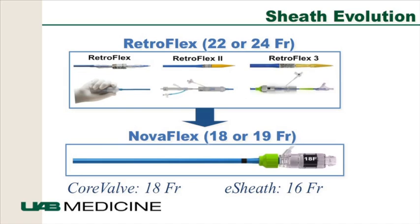Part of the ways of dealing with this is to reduce sheath sizes. The currently approved device comes with a RetroFlex catheter system used with a 22- or 24-French sheath — quite large. The Sapien XT, trialed but not yet FDA-approved, is compatible with an 18-French delivery system. The CoreValve is currently an 18-French system with an e-sheath at 16-French. The sheaths are getting smaller, and the hope is that with a smaller delivery system, the risk of vascular complications will improve.